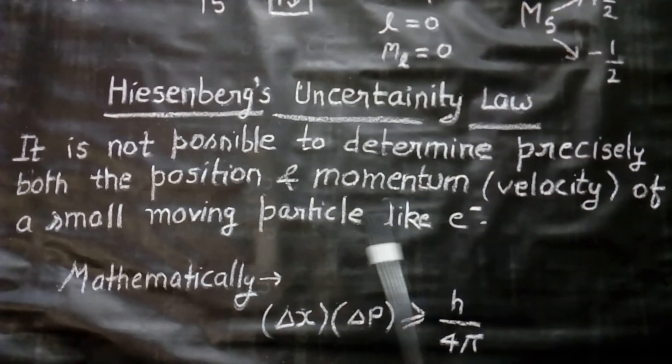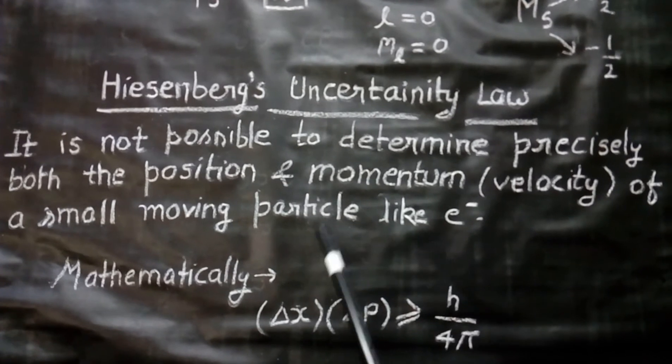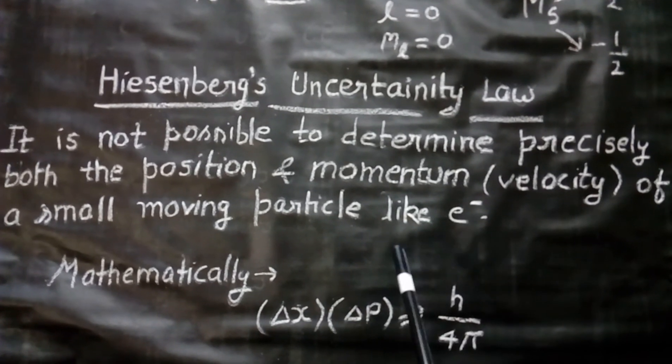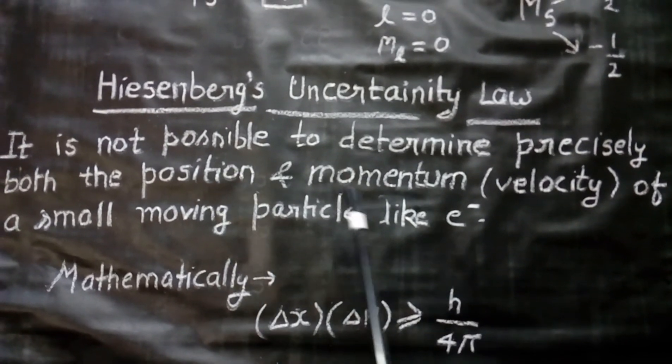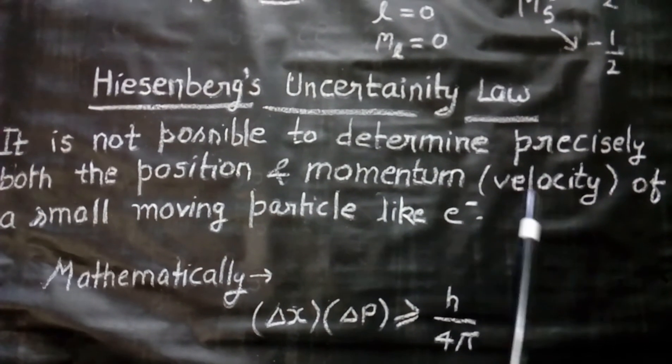As we know, electron behaves both like a particle and a wave. So, if we determine the position precisely, there will be uncertainty in the momentum or velocity.